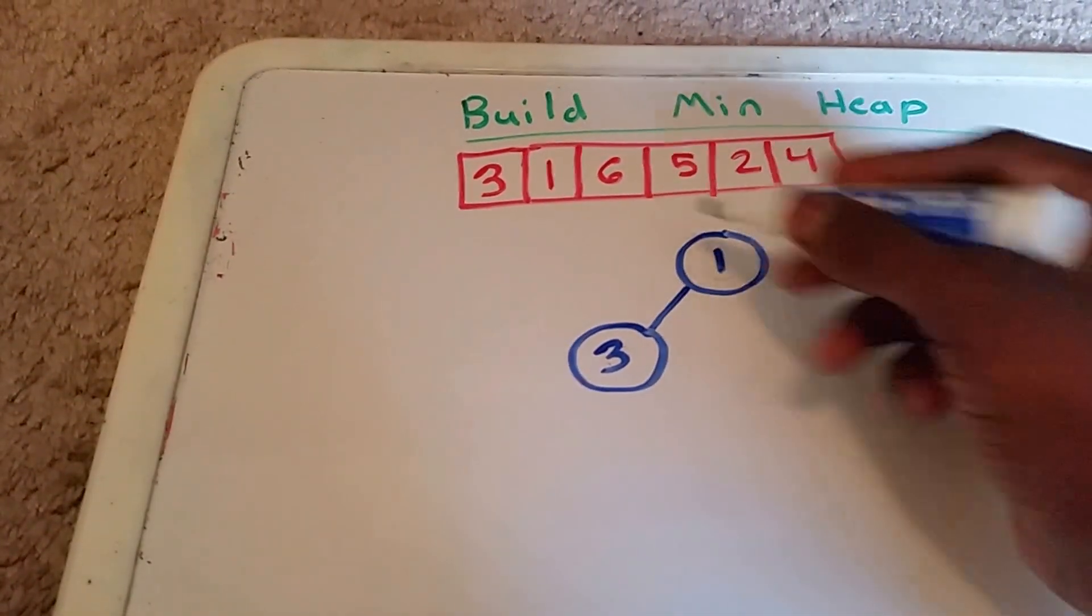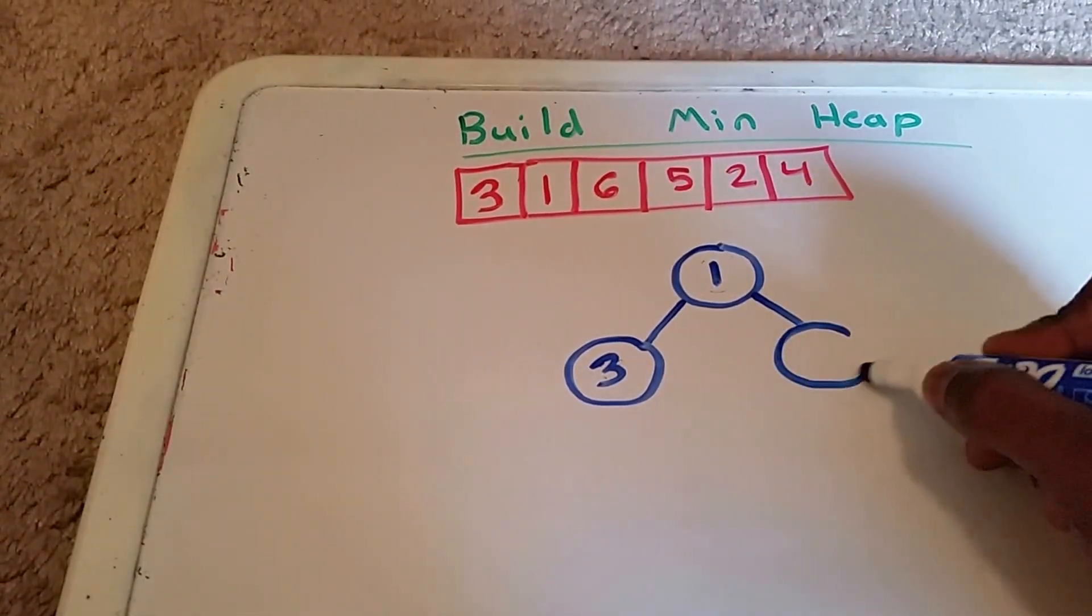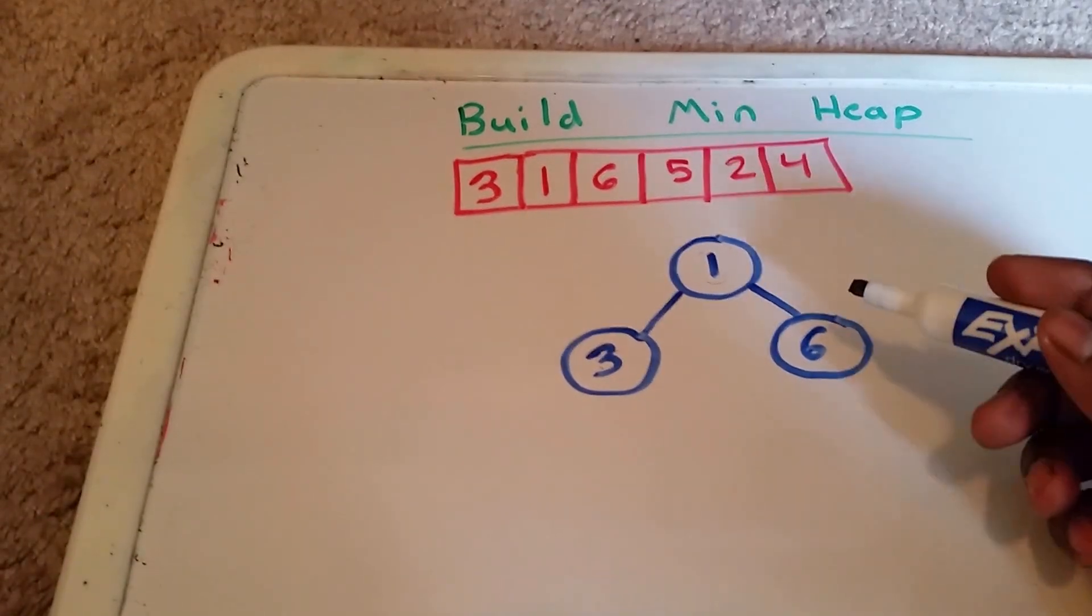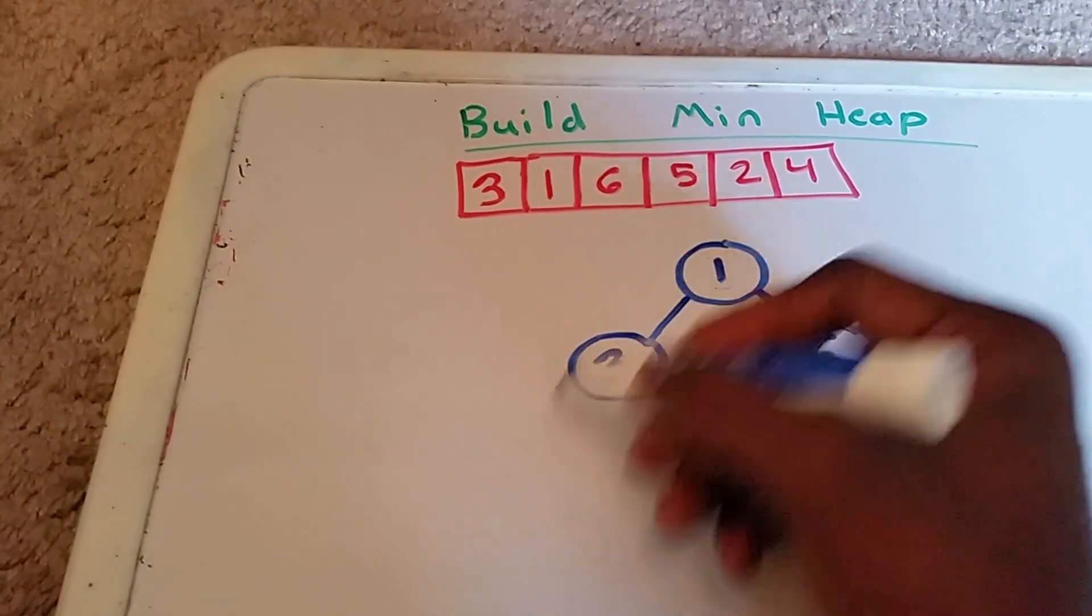Next up, we have the element 6, so we're going to add 6 here. And 6 follows that property—6 is greater than or equal to its parent. So next up we continue, we go top down, left right.